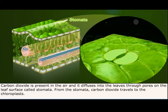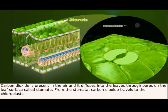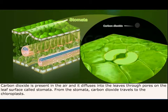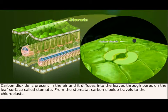Carbon dioxide is present in the air and it diffuses into the leaves through pores on the leaf surface called stomata. From the stomata, carbon dioxide travels to the chloroplasts.